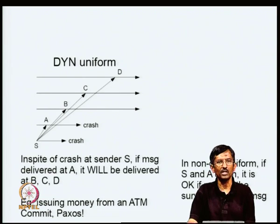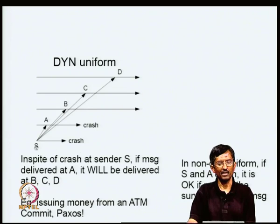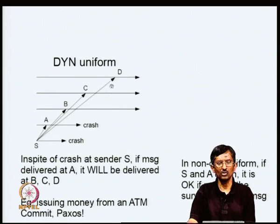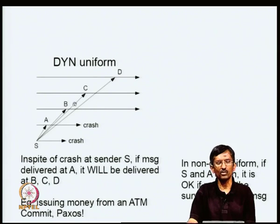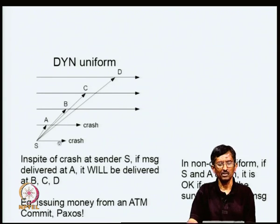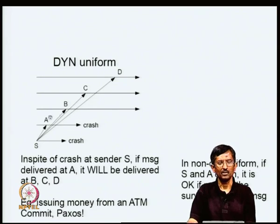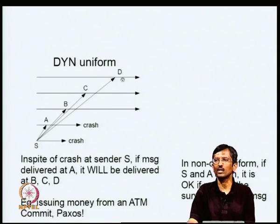There are other situations which are called non-dynamically uniform. If I crash and there is some kind of partition, messages may never make it to some places, and those applications never received the message — and it is okay in those situations. For example, in an air traffic control system where somebody is giving updates of aircraft positions to display stations A, B, C, D, the fact that the new updated view of what aircraft is being seen is not available to B, C, D is not really a serious issue.